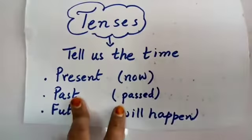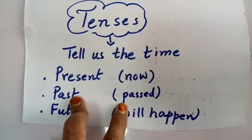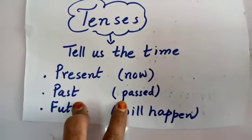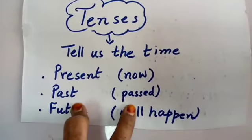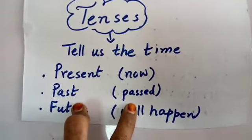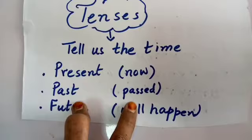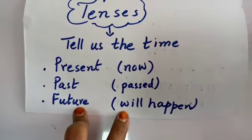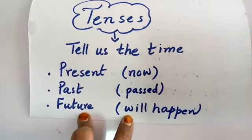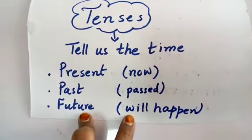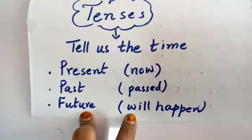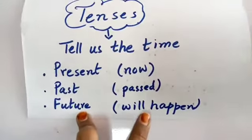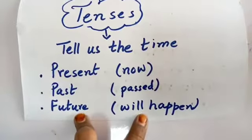Past tense tells us about anything that has happened in the past — jo guzar chuki hai, any action that is done. Future tense tells us about any action that is going to happen in the future — jo future mein hoga. That is future tense.